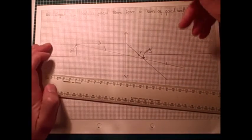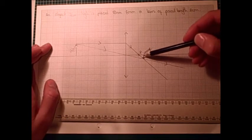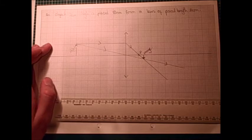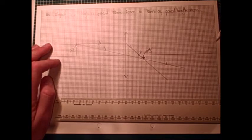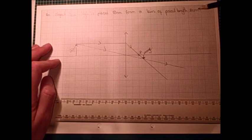And from this you can see that the image formed in this case is inverted, upside down, because the arrow is pointing down now. Is diminished. It's smaller than the original object. And we can tell that it's real, because it's formed where real rays cross.